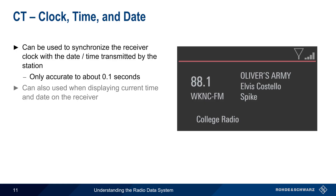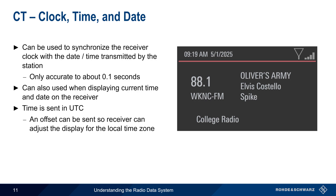In addition to being used for synchronization, this parameter also enables the receiver to display the date and time transmitted by the station. The time itself is sent in UTC, but an offset parameter enables the receiver to adjust the display to reflect the current time zone.